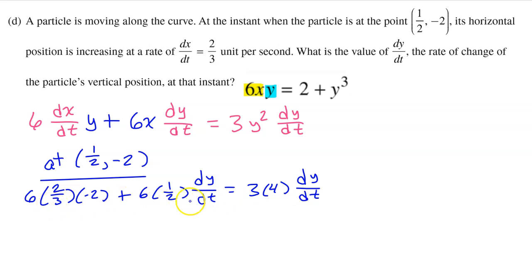So, let's simplify this just to make it easier to get dy/dt by itself. Let's see, 2/3 times 6, 6 times 2 is 12, divided by 3 is 4, 4 times -2 is -8. So, we have -8 plus, 1/2 of 6 is 3, and then we have dy/dt, is equal to 12 dy/dt.